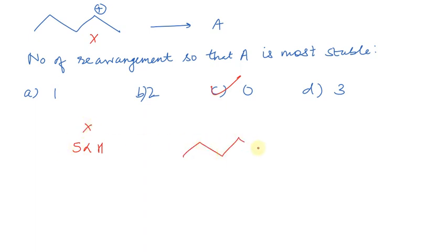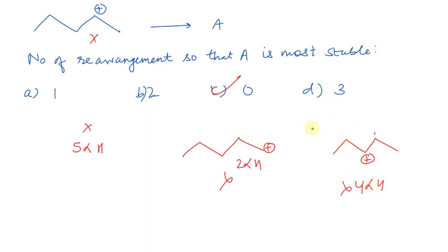Let's call this X — X has 5 alpha hydrogens. Checking the possibilities: we can go here, or here. In none of these possibilities does anything change — this means it will not rearrange. This compound will always stay as is; it will not rearrange. This is why the answer is option C — it is the correct answer. Let us move to the next question.